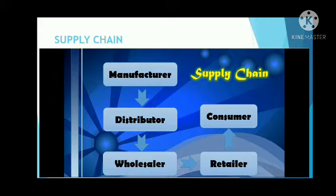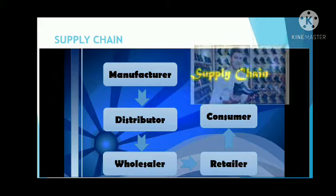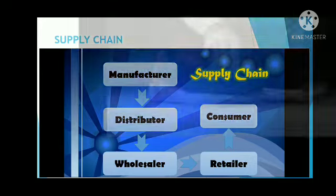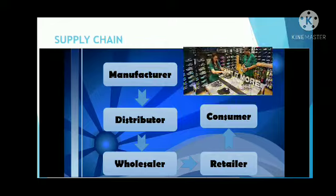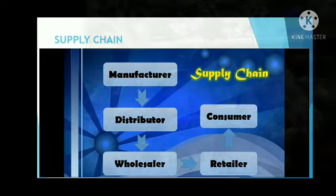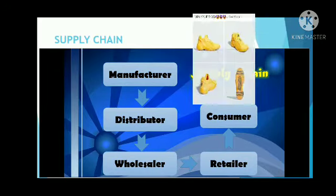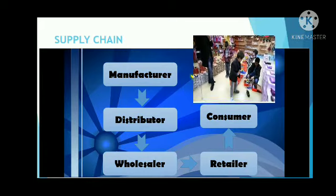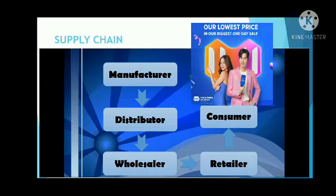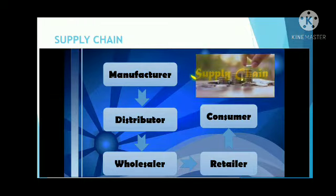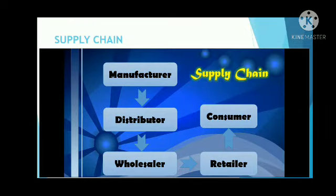In the supply chain, the manufacturer is the one charged to convert raw materials into finished products. These products are then transferred to a distributor or broker responsible for dispensing the product to wholesalers, whose role is to sell the product to companies or retail stores. A retailer or merchant is an entity that sells goods such as clothing or cars directly to consumers through various distribution channels, with the goal of earning a profit. A retailer can operate in a physical building or online.